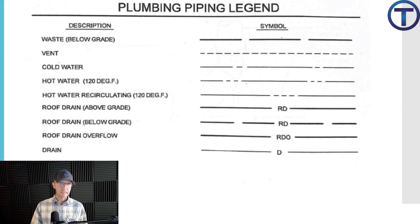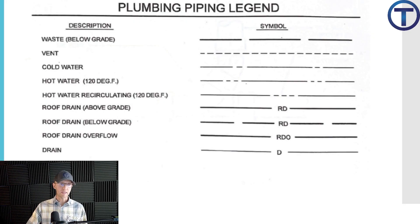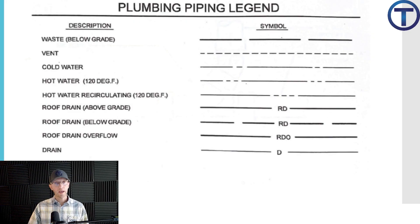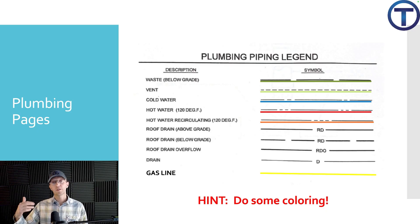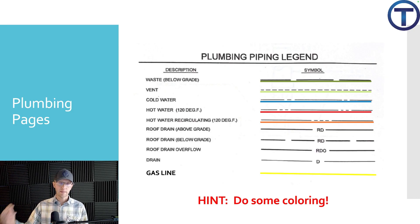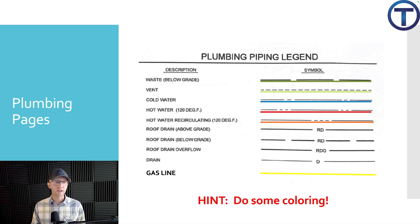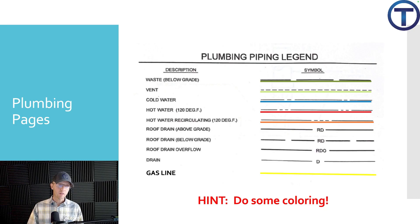Hot water recirculation has three dashes, so you can see the difference between cold, hot, and recirc. For roof drains, they put lettering right in — RD for roof drain, RDB for below ground, RDO meaning overflow or the secondary roof drain. This way we can differentiate which is which. To help as I'm looking at big paper plans, it's super helpful to add color — dark green for sewer and waste, lighter green for vent lines, blue for cold water, red for hot water, orange for hot water recirculation.